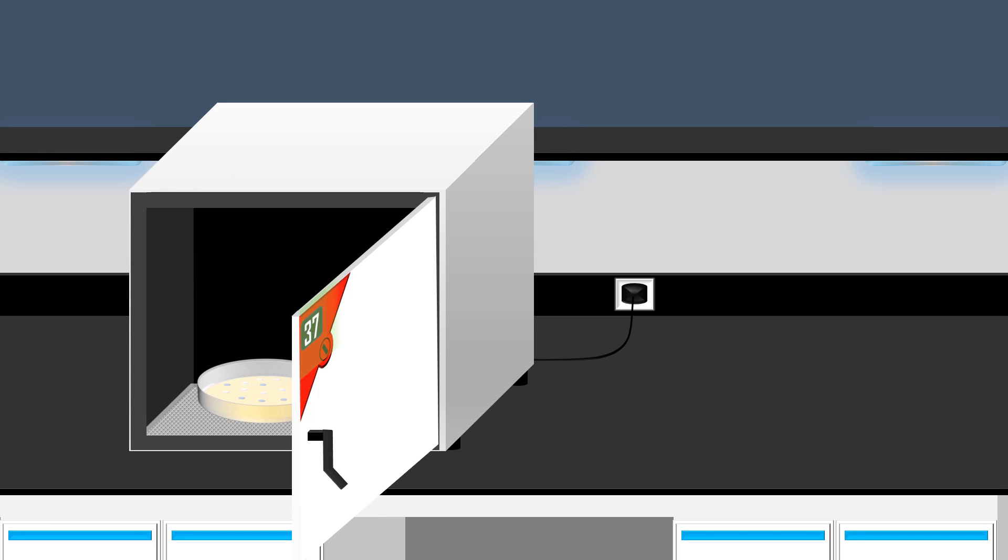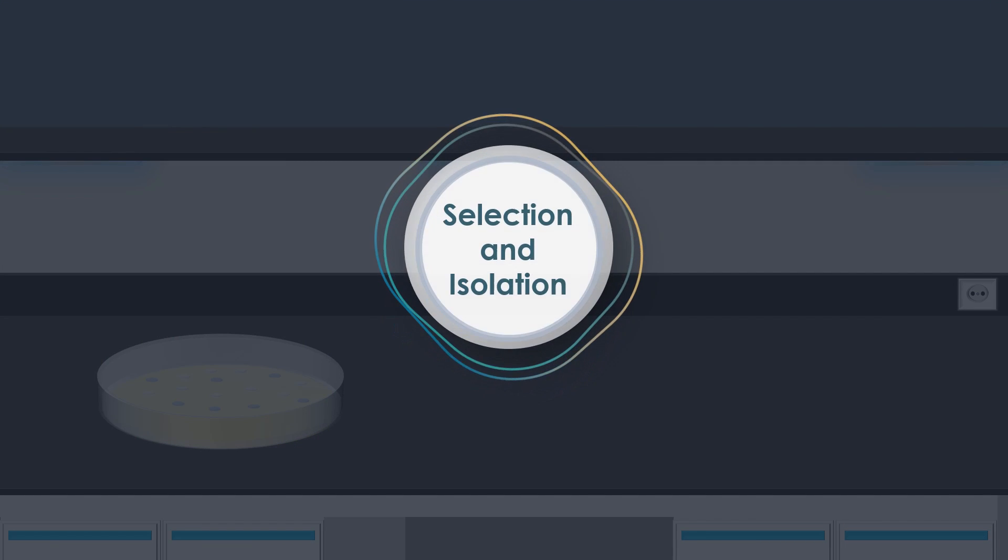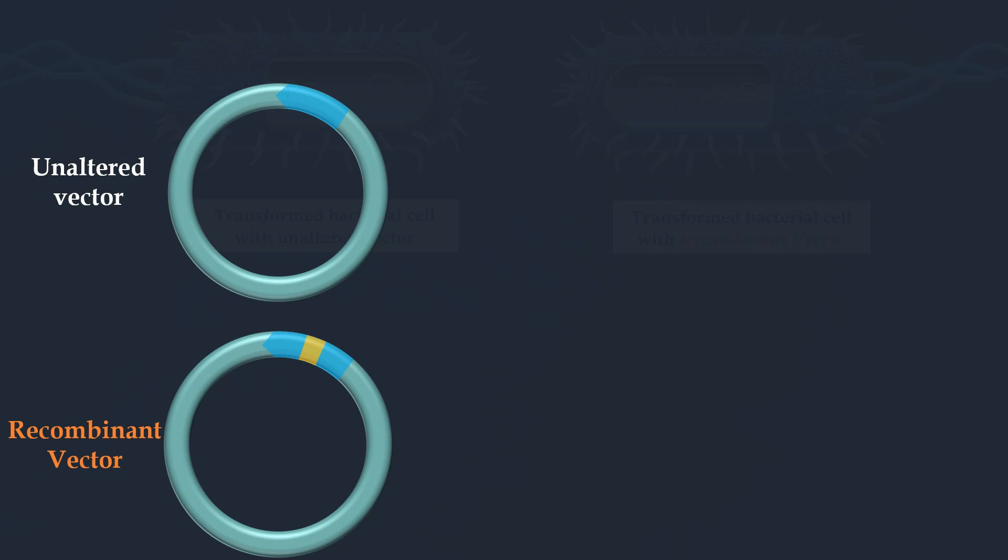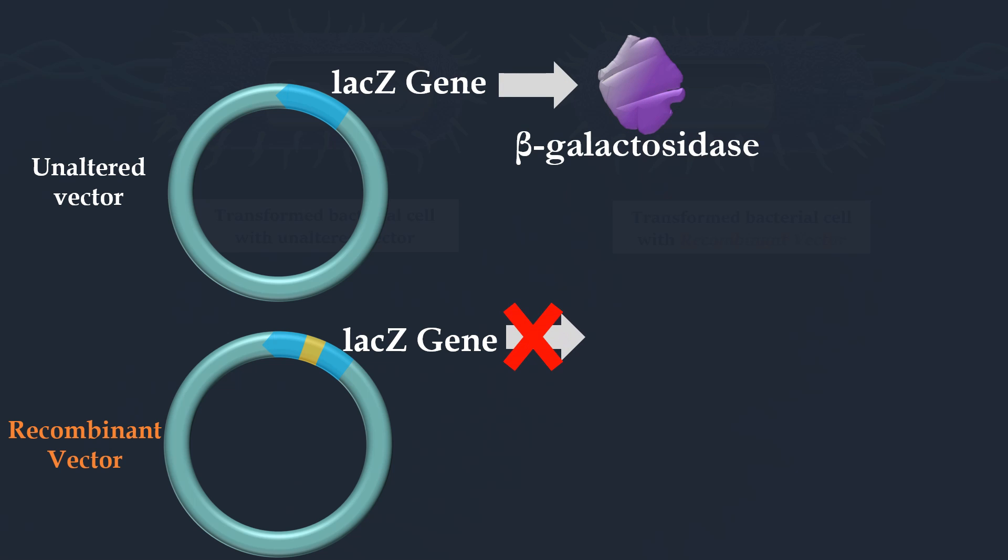After the incubation and multiplication of bacterial cells, the next step involves the selection and isolation of our transformed bacterial cells carrying the recombinant plasmid. The unaltered vector signifies that the LAC-Z gene, which typically codes for the beta-galactamase enzyme, can function normally. In the recombinant vector, where our gene is inserted into the LAC-Z gene, the normal function of this gene is disrupted, leading to the inability to produce the beta-galactamase enzyme.